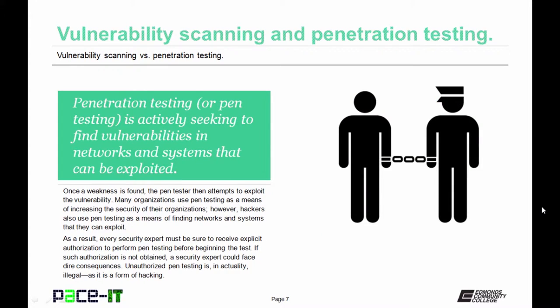Penetration testing, or pen testing, is actively seeking to find vulnerabilities in networks and systems that can be exploited. Once a weakness is found, the pen tester then attempts to exploit the vulnerability. Many organizations use pen testing as a means of increasing the security of their organizations. Hackers also use pen testing as a means of finding networks and systems that they can exploit.